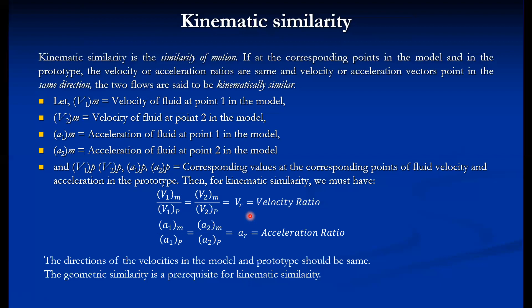Geometric similarity is a prerequisite for kinematic similarity. Unless both model and prototype are geometrically similar, kinematic similarity cannot be achieved. That is, once the model and prototype are geometrically similar, we can then calculate velocity and acceleration ratios.